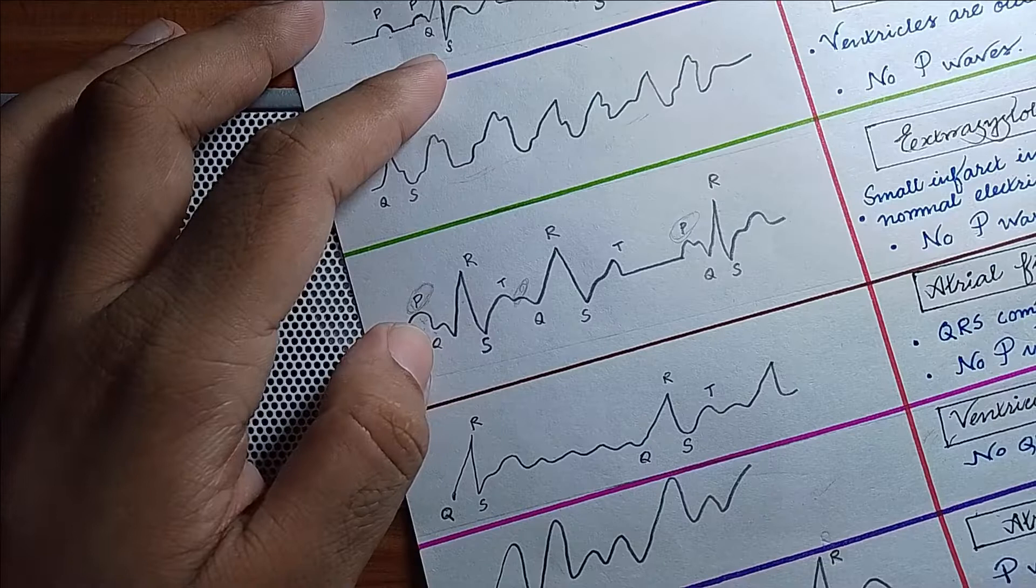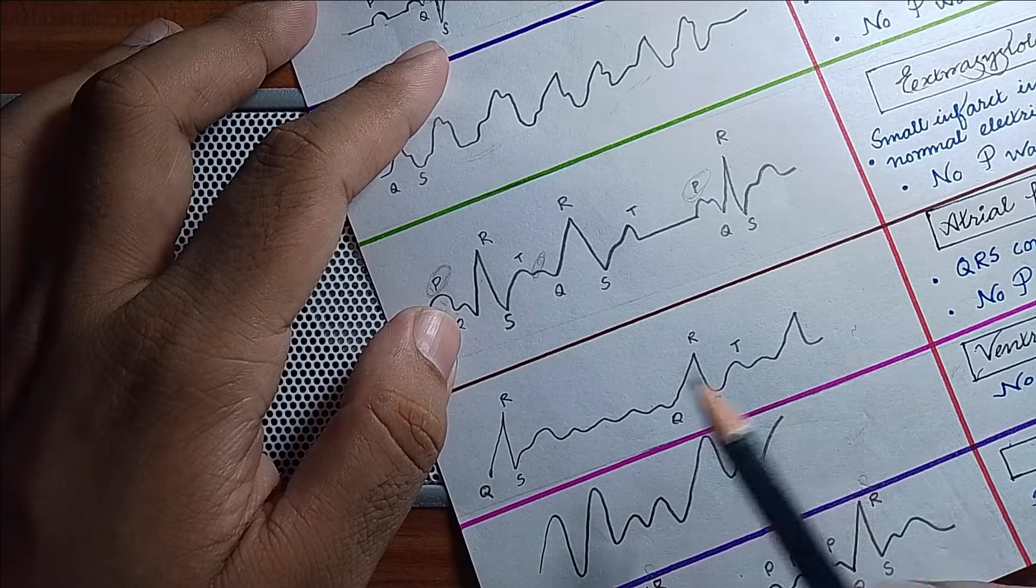In the next ECG you can see there are again no P waves and the QRS complex is also irregular, right? So the most likely diagnosis is atrial fibrillation.